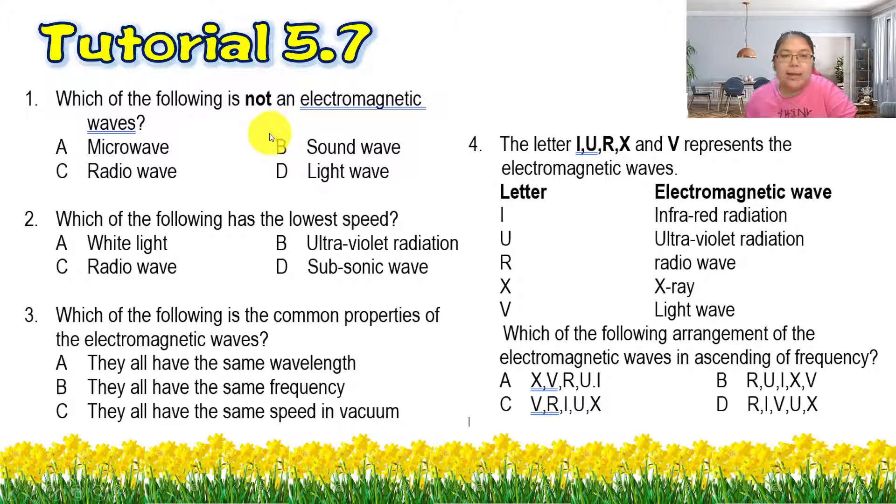Number two, which one following has a lower speed? Lower speed, sure, also is sound wave. So from here we check which one is the sound wave. White light is visible light, radio wave, ultraviolet radiation, subsonic wave is a sound wave, so D should be the answer.